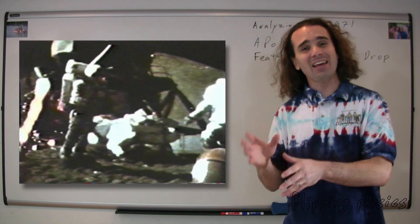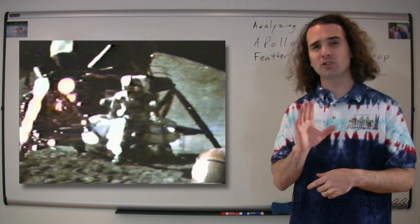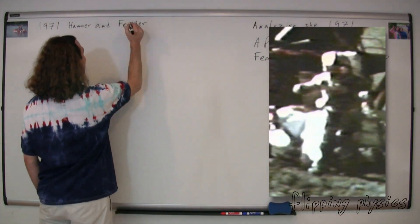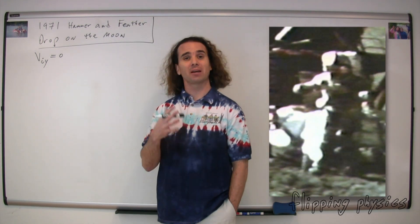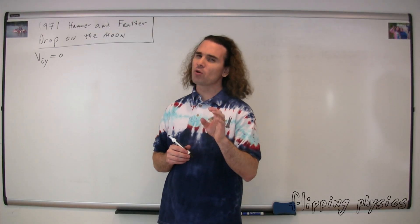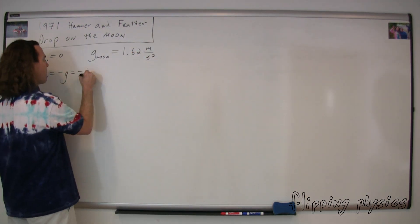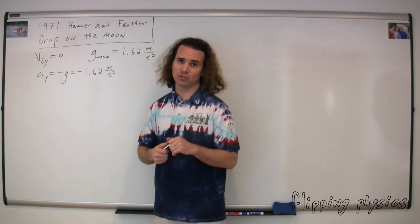So now what we're going to do is take a look at the video and figure out variables that we know, and see what we can calculate from there. So Bobby, looking at the video — which I have now looped to just show the dropping of the objects — tell me a variable that we know. Is the initial velocity zero? Yes, the initial velocity in the y direction is equal to zero because he drops the hammer and the feather. We know from the last lecture that the acceleration due to gravity on the moon is about one-sixth of what it is here on Earth. More specifically, it's 1.62 meters per second squared. And therefore, the acceleration in the y direction, which is equal to negative little g, is equal to negative 1.62 meters per second squared.